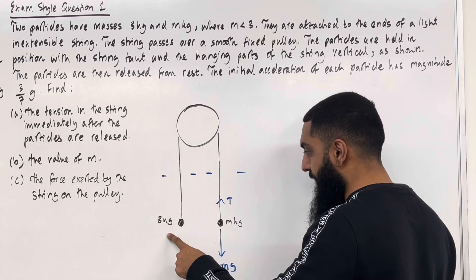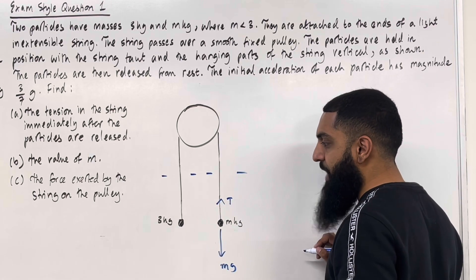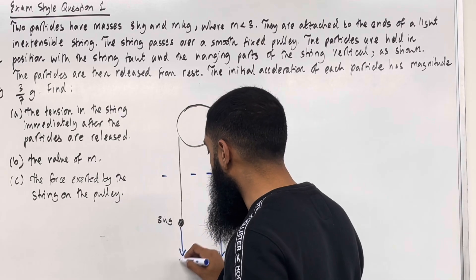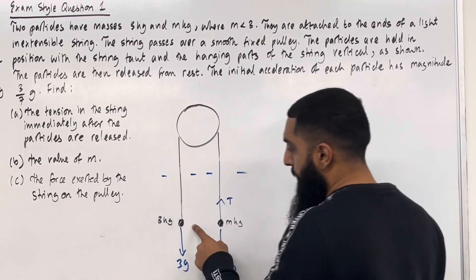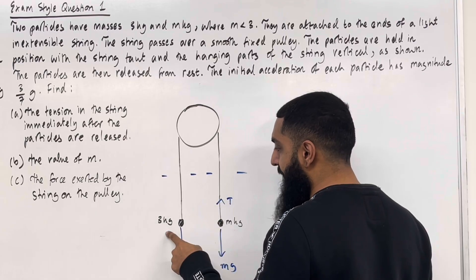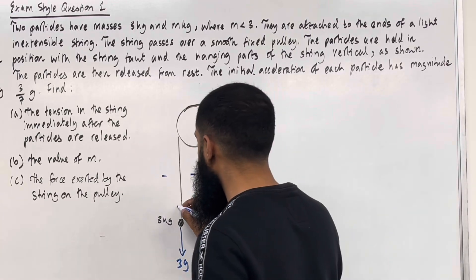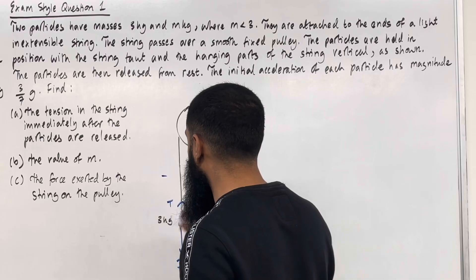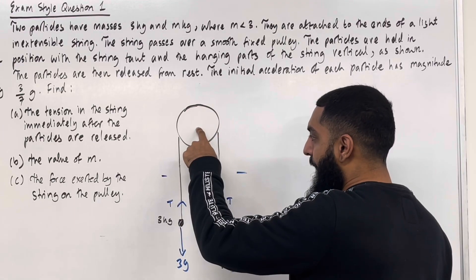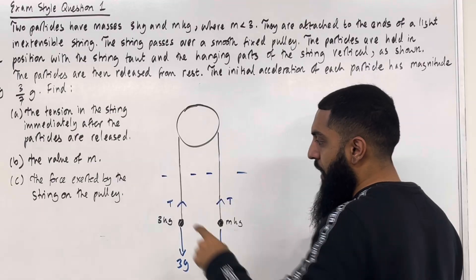Let's move on to the 3 kg particle. Firstly, we have the weight of the 3 kg particle acting vertically downwards, given by 3g. Because of this weight we have a tension in the string for the 3 kg particle acting vertically upwards. It is T, because in the question we have a smooth pulley — hence the tension is the same throughout the string. We can call it T.